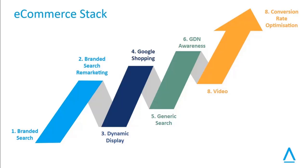Talking specifically about the e-commerce stack within Google, there's a whole bunch of different options. Typically branded search would be the thing that you need to start with — making sure that for your own brand terms, you're dominating the mobile screen. Sadly, SEO is often not enough to make sure that you're getting the lion's share of mobile traffic. On top of branded search, you can then introduce audiences — imagine all the people who have hung out on your website and not taken a purchase or action. You can then remarket to those people with branded search.